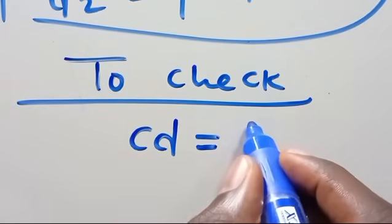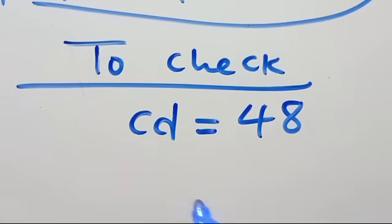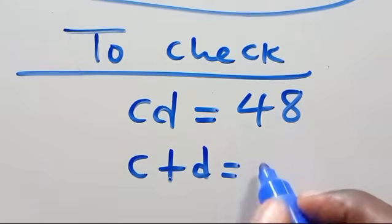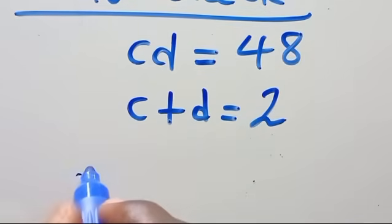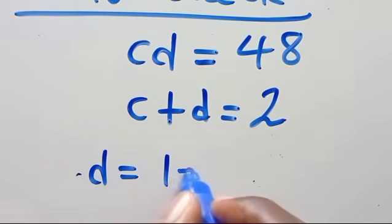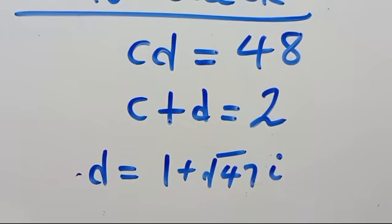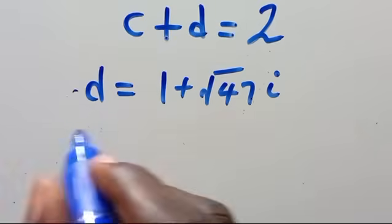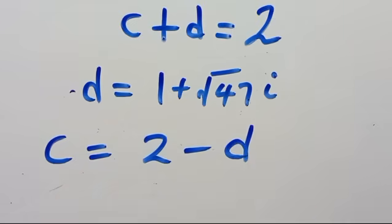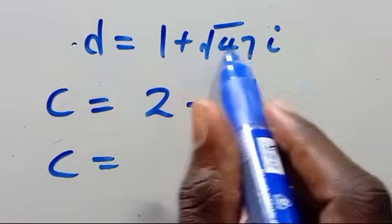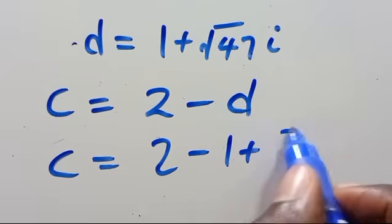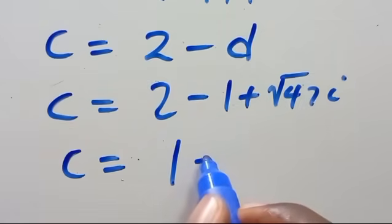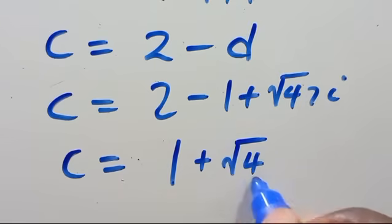To check the complex solutions: we have cd equals 48 and c plus d equals 2. When d equals 1 plus square root of 47 i over 2, since c equals 2 minus d, we get c equals 2 minus (1 plus square root of 47 i) which gives c equals 1 minus square root of 47 i.